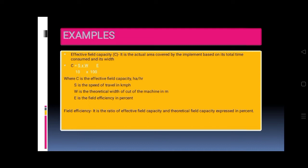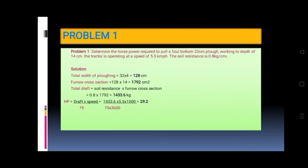Problem 1: Determine the horsepower required to pull a four-bottom, 32-centimeter plow, working to depth of 14 centimeter. The tractor is operating at a speed of 7.5 kilometer per hour. The soil resistance is 0.8 kilogram per centimeter squared.